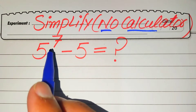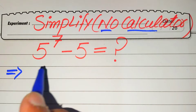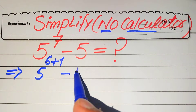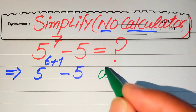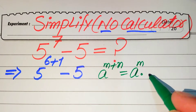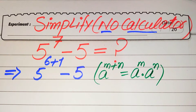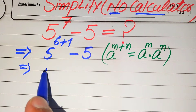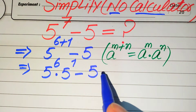First, we need to focus on the exponent of this term. The exponent of 5 is 7, so we break this 7 as 5 to the power of 6 plus 1, minus 5. Here we use the exponential law: a to the power of m plus n equals a to the power of m multiplied by a to the power of n. According to this rule, we write the first term as 5 to the power of 6 multiplied by 5 to the power of 1, minus 5.